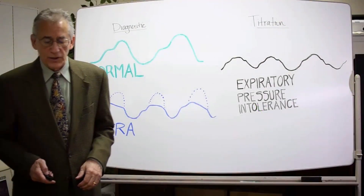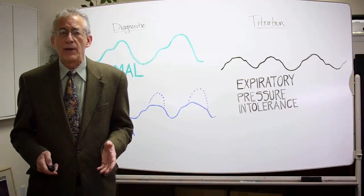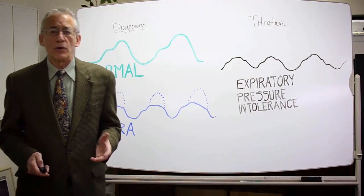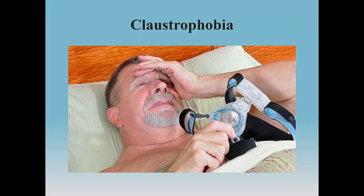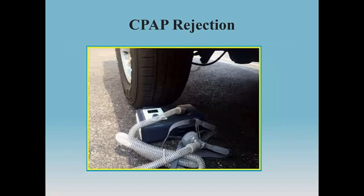Expiratory pressure intolerance is a sign of both subjective and objective discomfort. For example, many patients who are prone to anxiety, such as insomniacs, will develop claustrophobia. Some people will reject CPAP quite vigorously because they do not like it, and some even perceive it as a traumatizing experience.